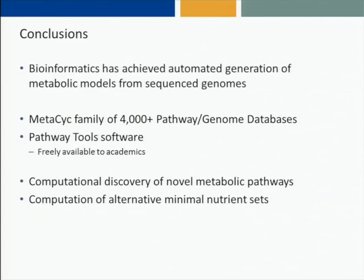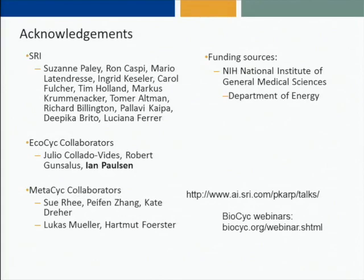To wrap up: I've described the overall approach to automating generation of metabolic models from sequenced genomes, going through reactome inference, pathway inference, model generation, and model gap filling. I've talked about the MetaPsych family of roughly 4,000 pathway genome databases, of which about 3,000 are available through our BioPsych website, all generated using the Pathway Tools software, which is freely available to academics. I've also talked about algorithms for computational discovery of novel metabolic pathways and computation of alternative minimal nutrient sets from an organism's metabolic network. Thanks to my coworkers at SRI, many collaborators including Ian Paulson, and our funding sources at the NIH and the Department of Energy.